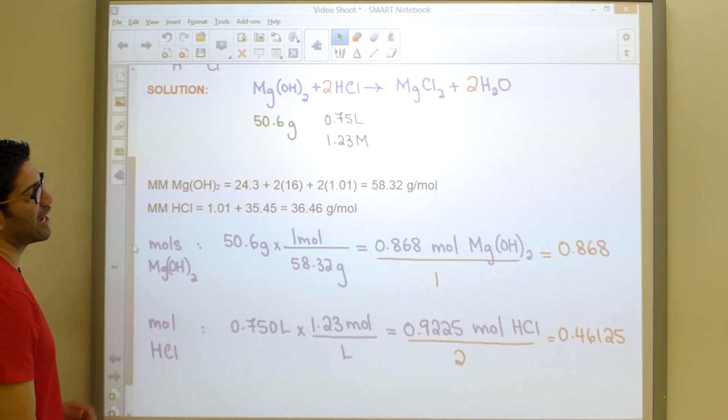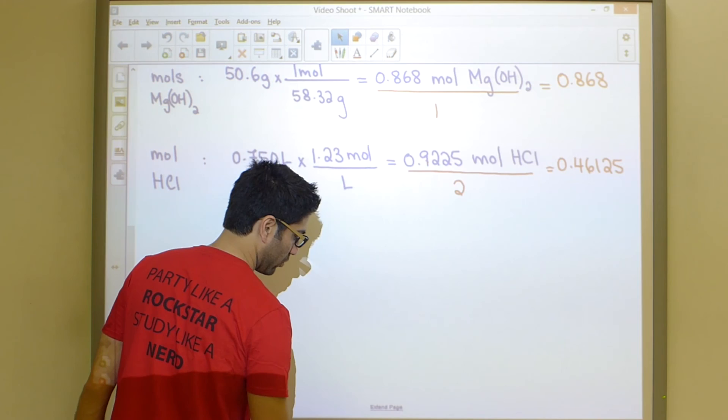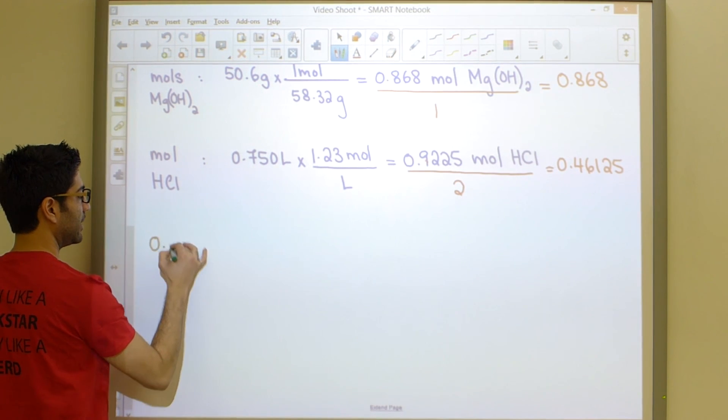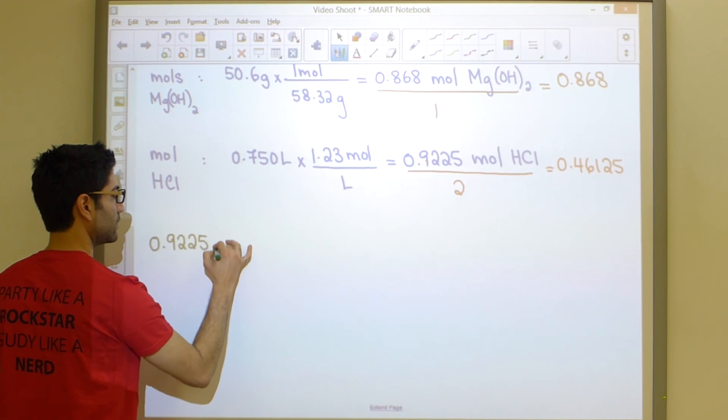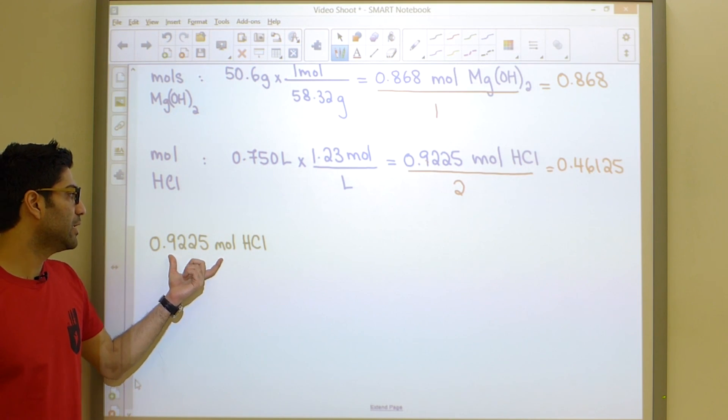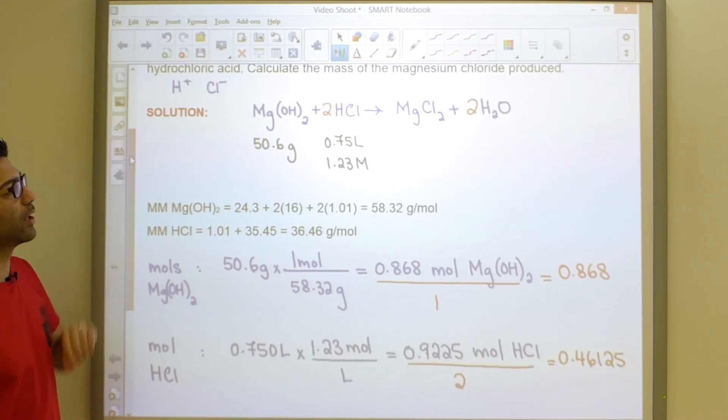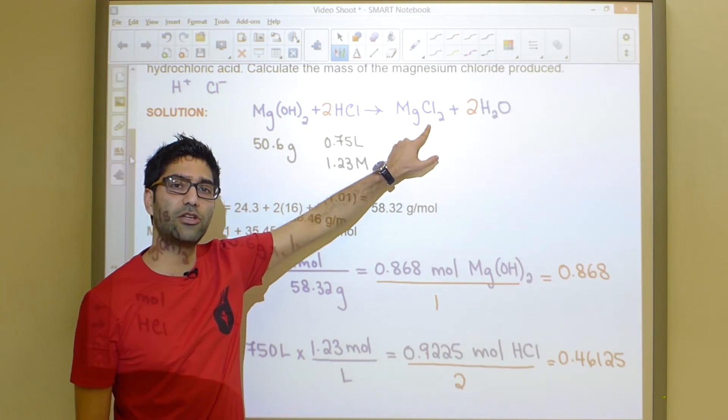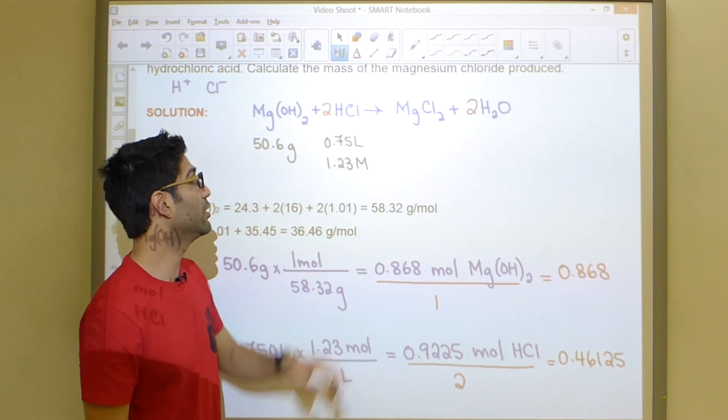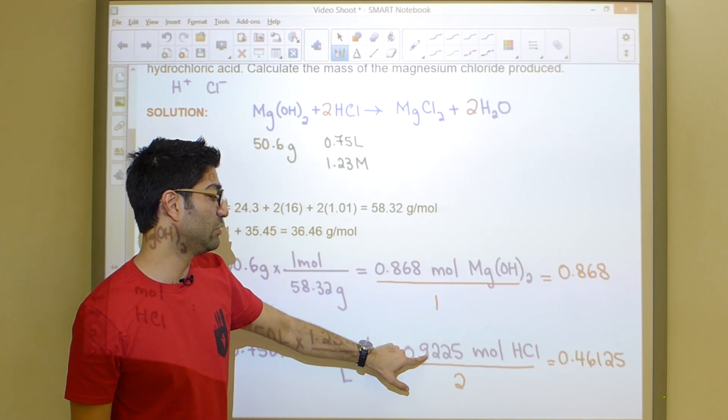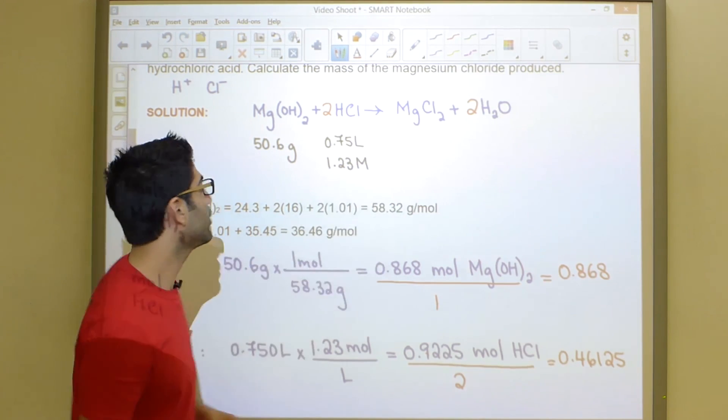This particular question is asking us how much magnesium chloride is produced. In order to figure that out, we have one more line to write out. We're going to start with the number of moles of our limiting reactant. Once we have the number of moles of HCl, we can use our equation to go from where we are to where we want to go. We are currently over here and we want to go over here. Our balanced equation gives us a mole ratio which we will now use. We know that two of these make one of those.